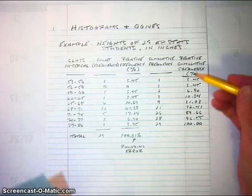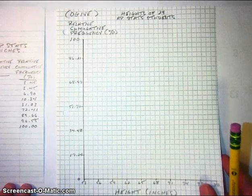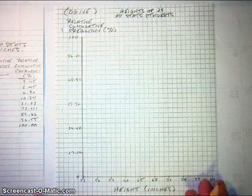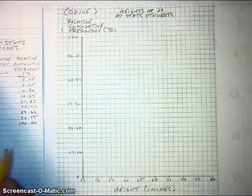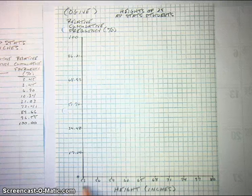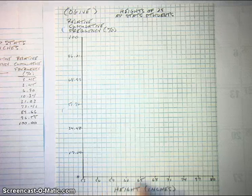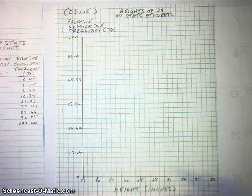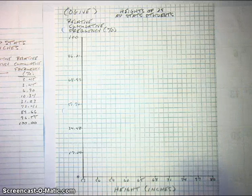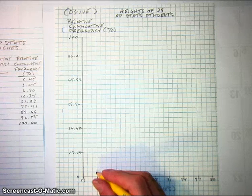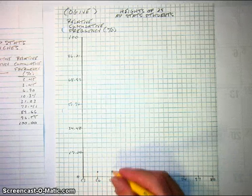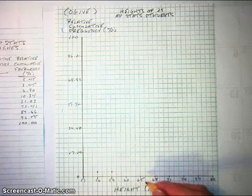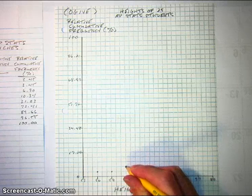What we're going to make from these relative cumulative frequencies is called an ogive — a relative cumulative frequency graph. It's basically a line graph with height on the horizontal axis running from 53 to 80 inches in 3-inch intervals. We plot the relative cumulative frequencies at the right end of each interval, then connect the dots with line segments. In the first interval we had 3.45%, and in the second interval we didn't add any more, so the running total stays at 3.45%. In the third interval we added one more, raising the total to 6.9%.